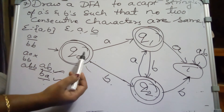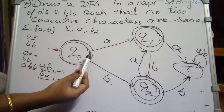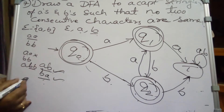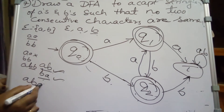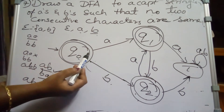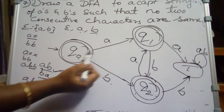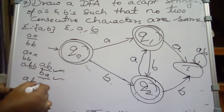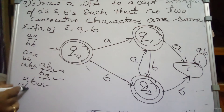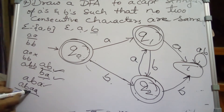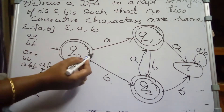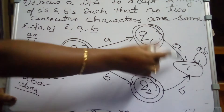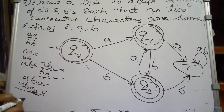The DFA accepts strings which do not have two consecutive same symbols. For example, the string ABA: on A go to Q1, on B go to Q2, on A go to Q1 — accepted. For ABAA: on the second A it goes to the trapped state and gets rejected.